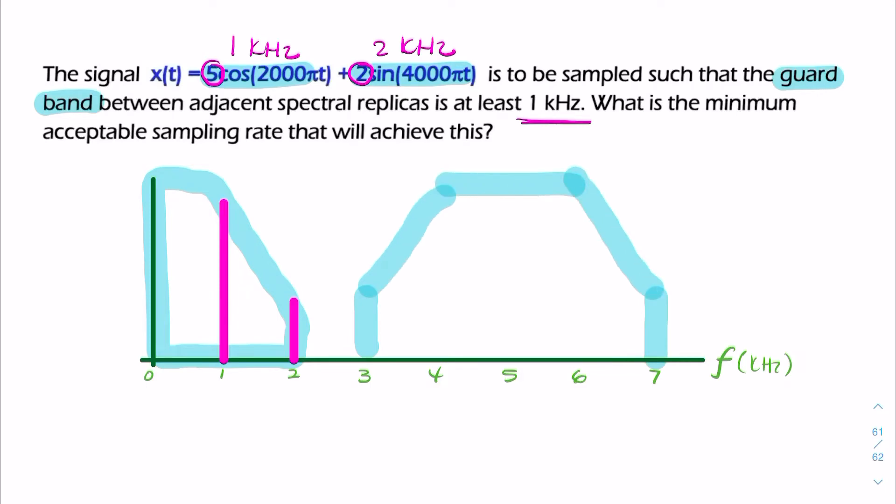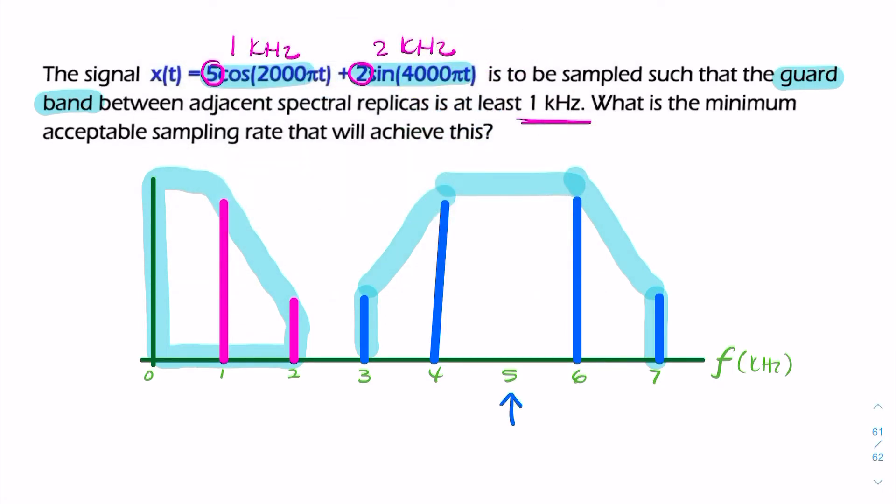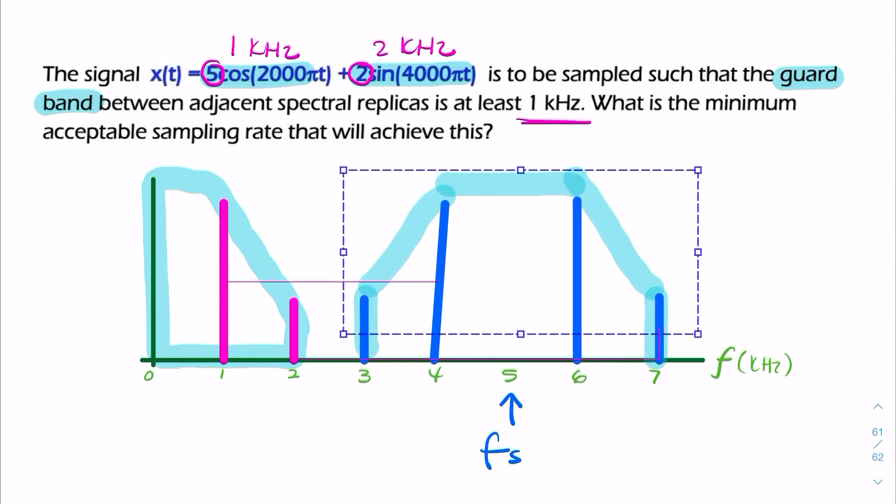And it would have spectral components of amplitude 2 and then 5 and then 5 and then 2, because it would be symmetric. You'd have your sample rate in the middle. So if I illustrate this is my sample rate, then as the sample rate goes up and down, that spectral replica, that copy, goes up and down.